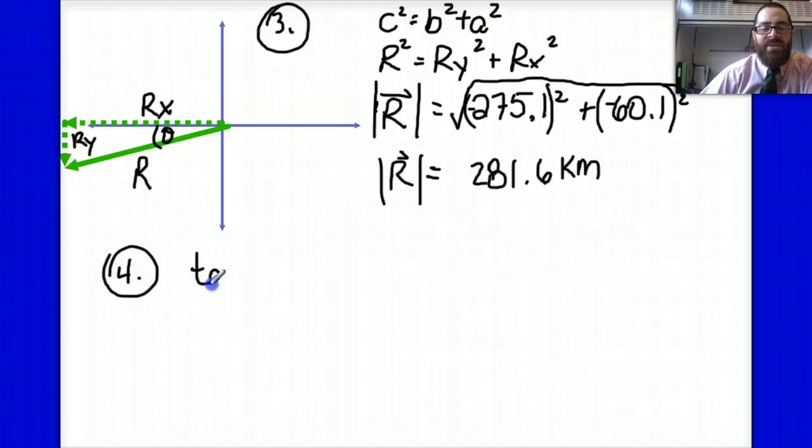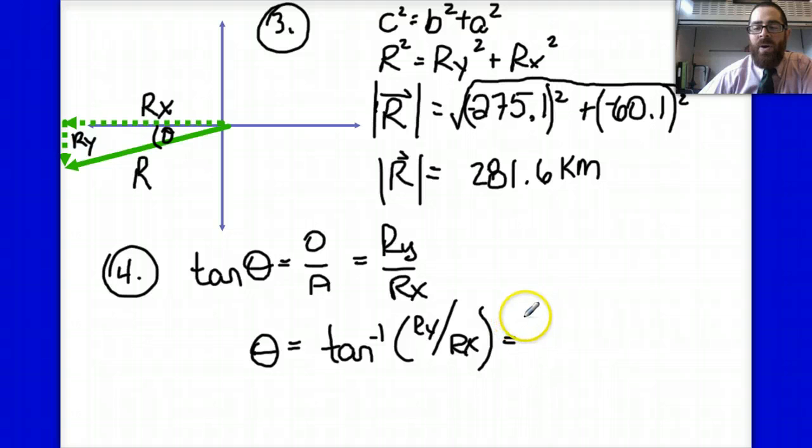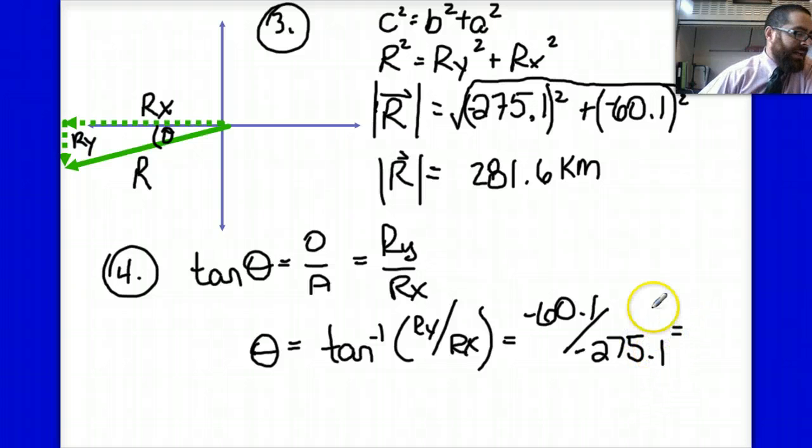You should recognize from class that I can use the tangent to relate the opposite in the adjacent side, opposite being RY, adjacent being RX. I'll write that in this form, tan is equal to opposite over adjacent, or in physics terms, RY over RX. Taking the inverse tangent of both sides, I get theta is equal to inverse tan RY over RX. And when I plug these numbers into my calculator, RY being negative 60.1, dividing it by negative 275.1, I end up getting 12 degrees.